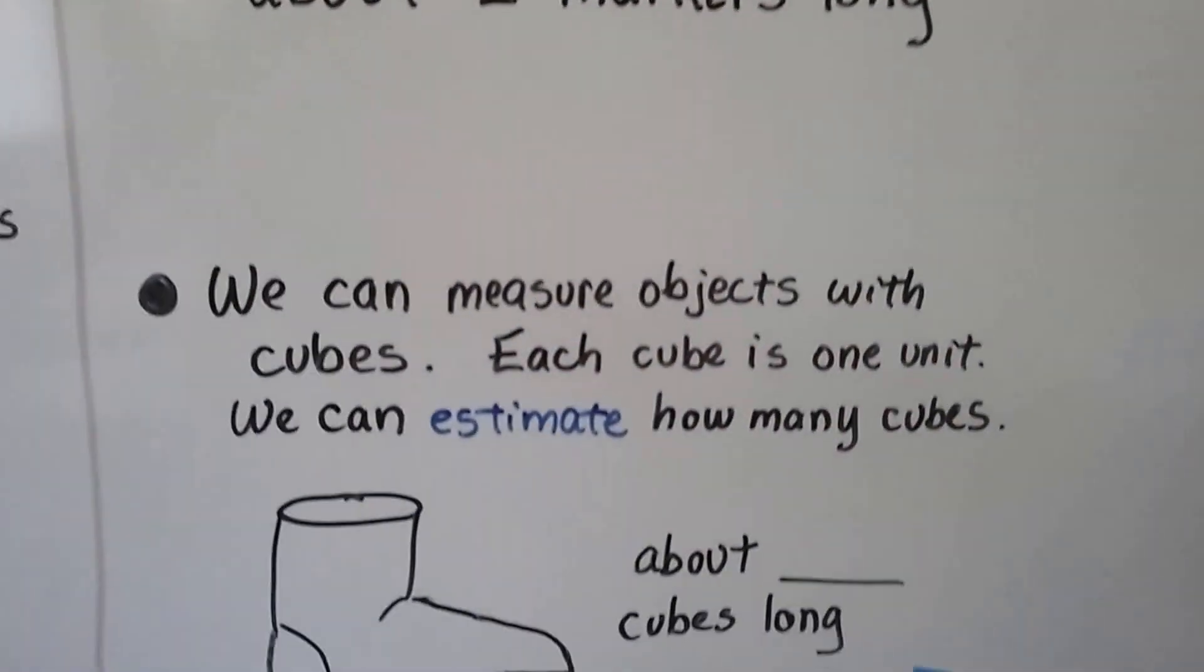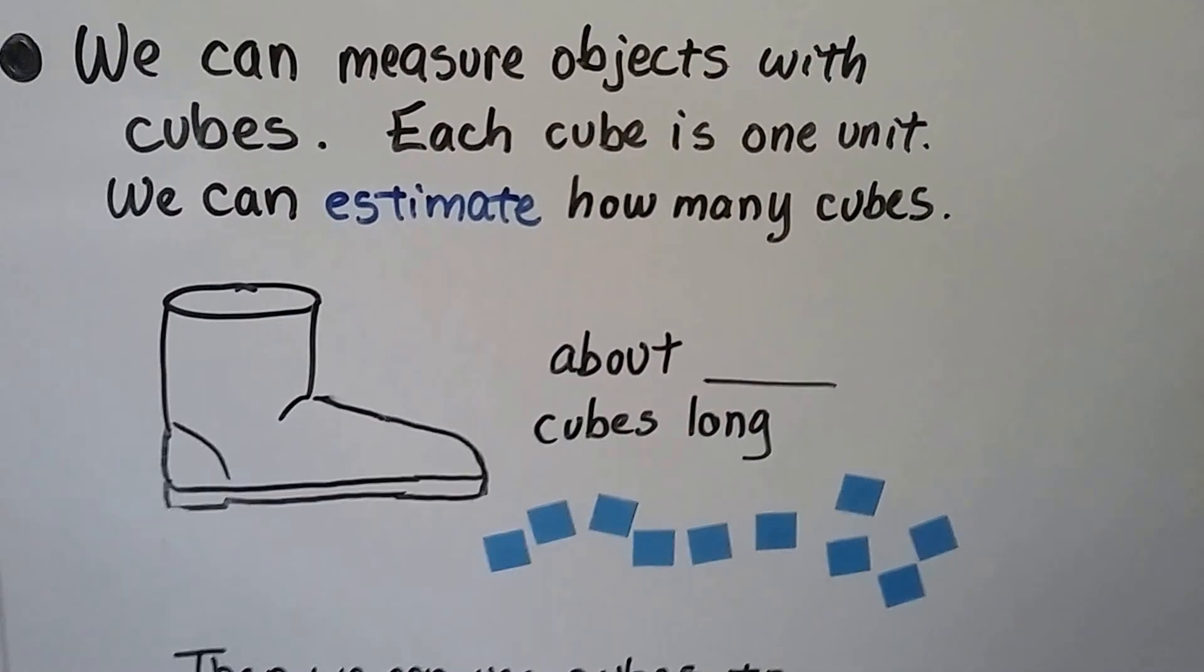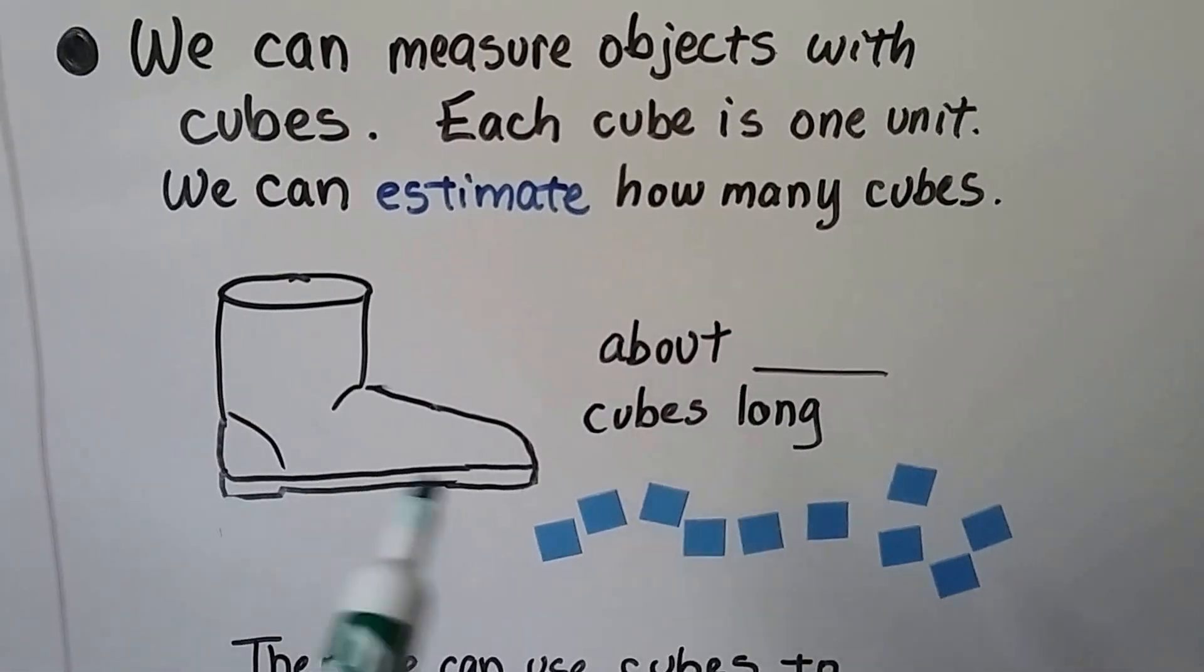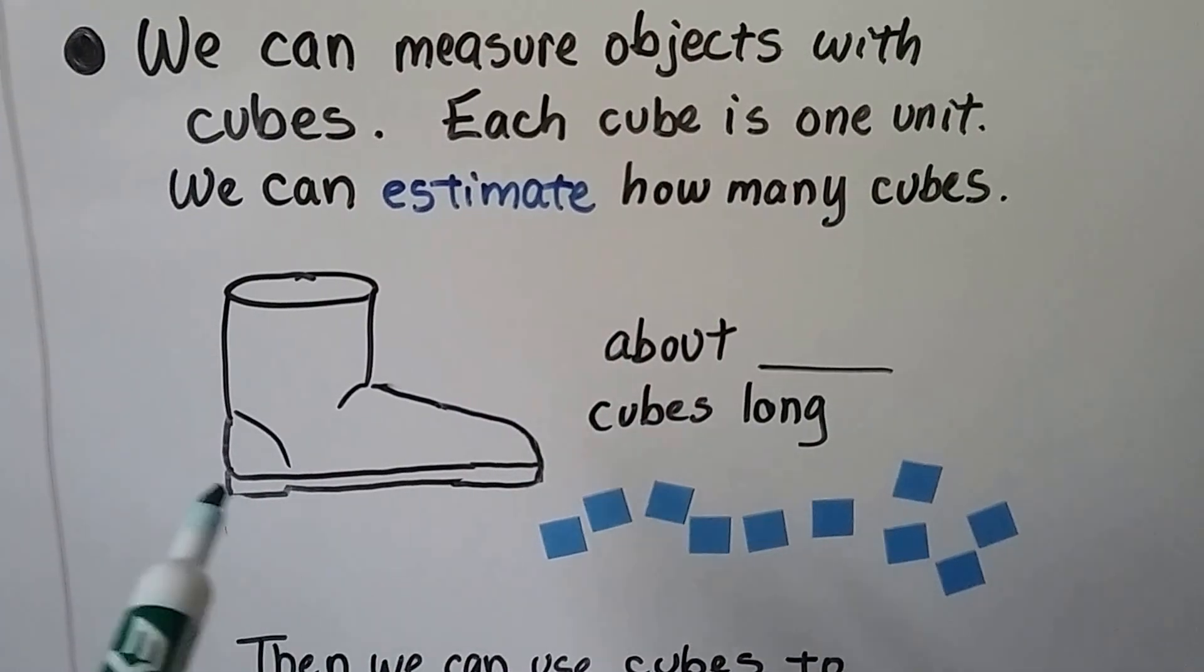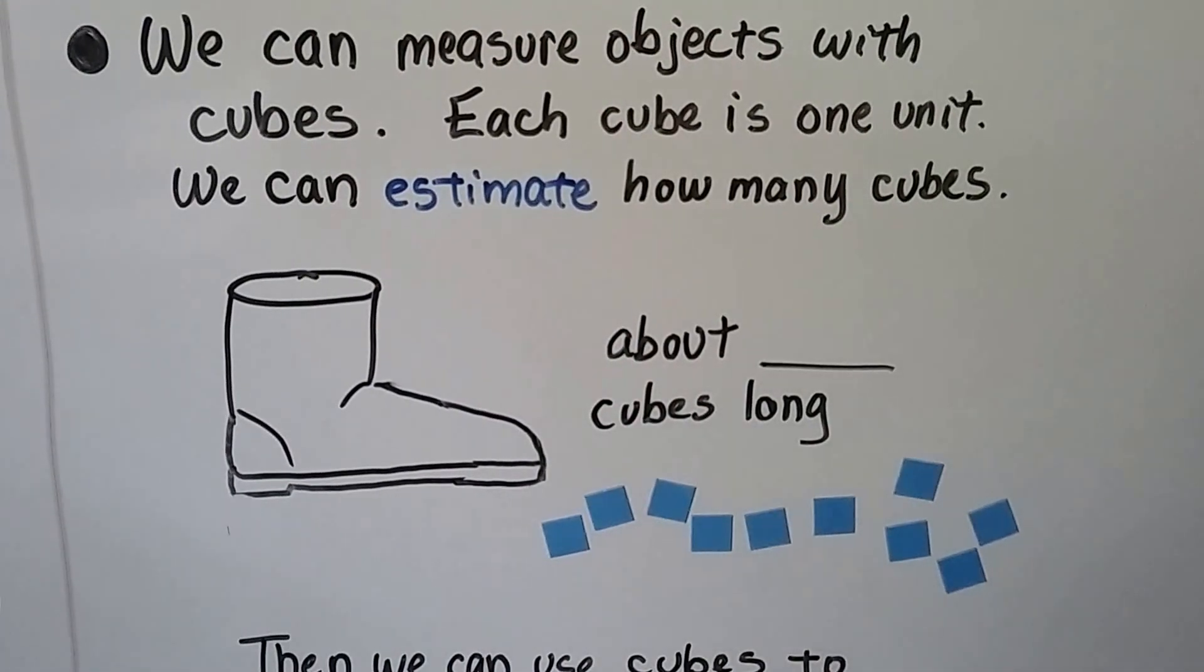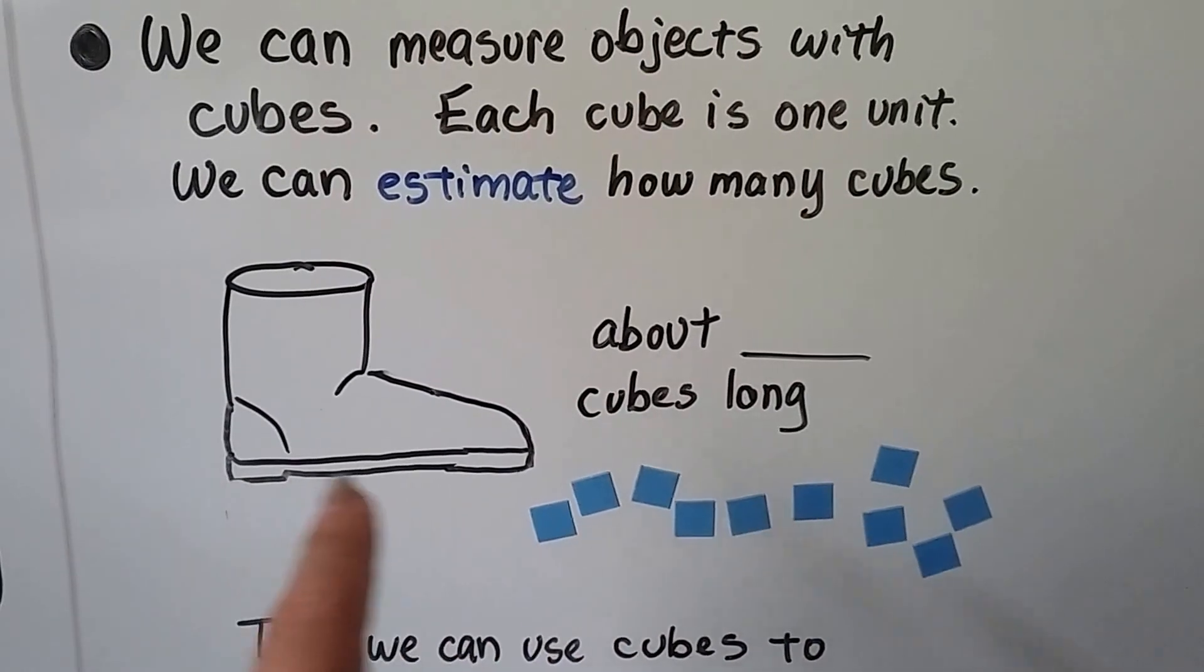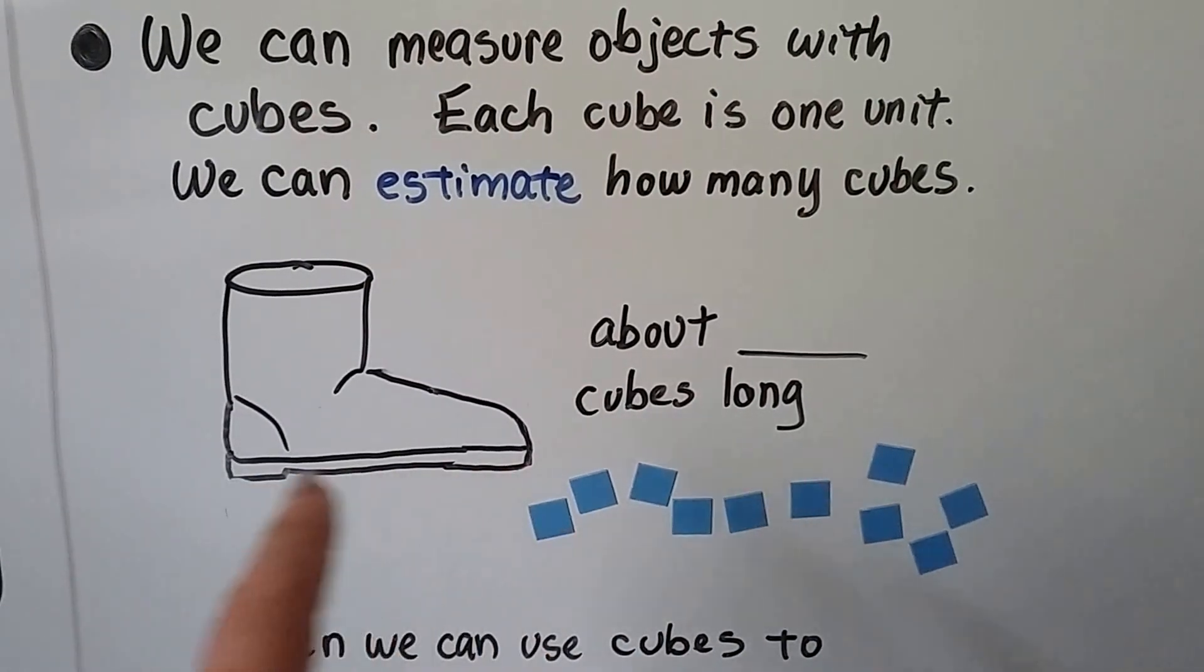We can measure objects with cubes and each cube is one unit. We can estimate how many cubes. About how many cubes do you think this boot is for its length going this way? Here's the cubes. About how many of these cubes do you think would line up along the bottom here?